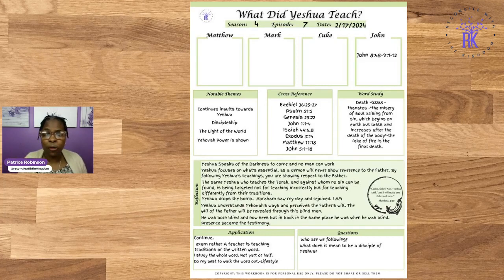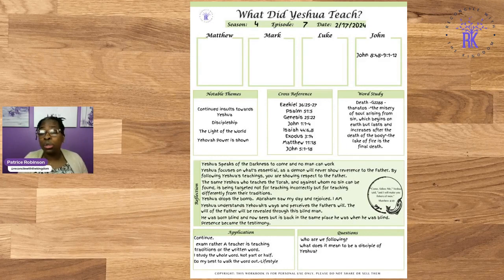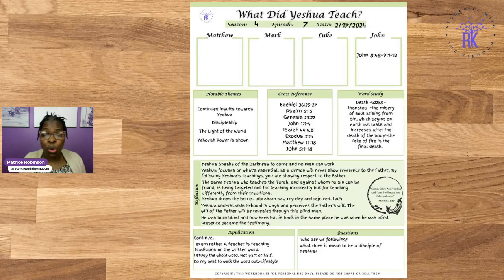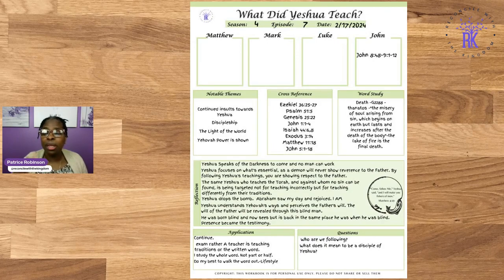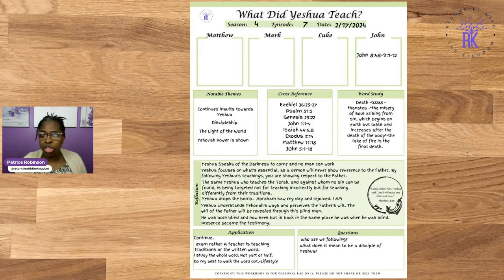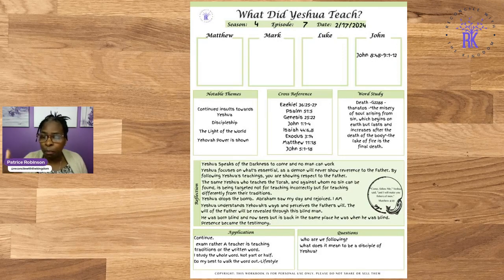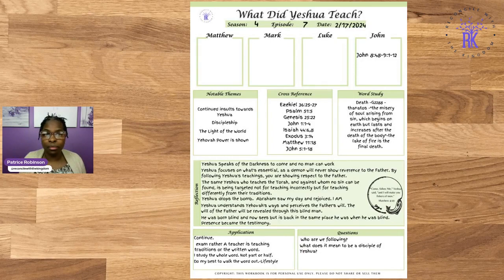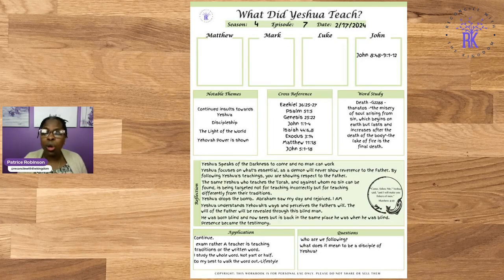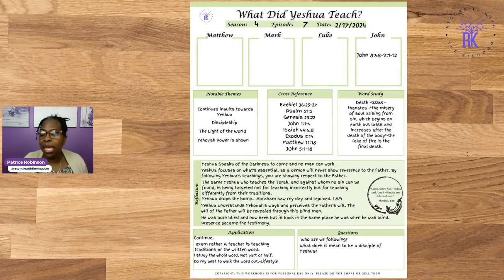I continue to study the whole word, not part, not half, but the whole word, and I would do my best to walk in the word. This is a lifestyle, following and being a disciple of Yeshua. What does it mean to be a disciple of Yeshua? That means there's a whole lifestyle change, the whole renewing of the mind, being born again by the washing of the water of the word. The word renews your mind. All of this. So who are we following will always remain a question on our journey.